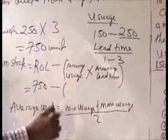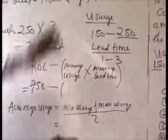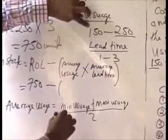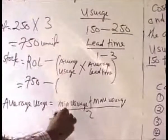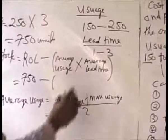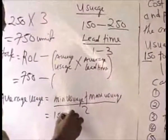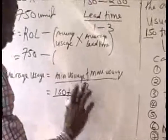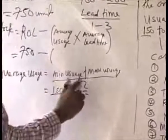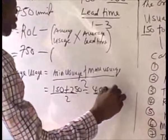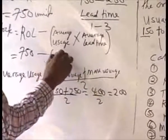So what's our average usage? Our minimum usage is 150, and our maximum usage is 250. So 150 plus 250 equals 400, divided by 2 gives us 200. So our average usage is 200.